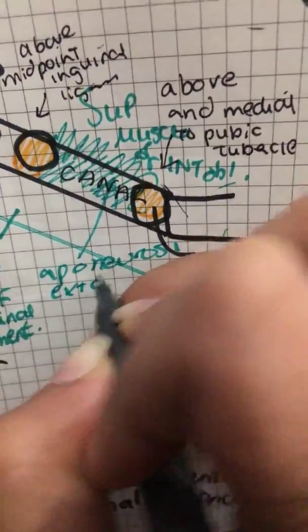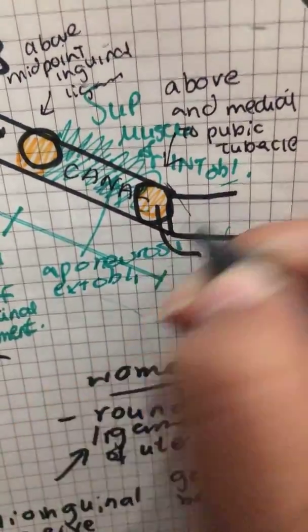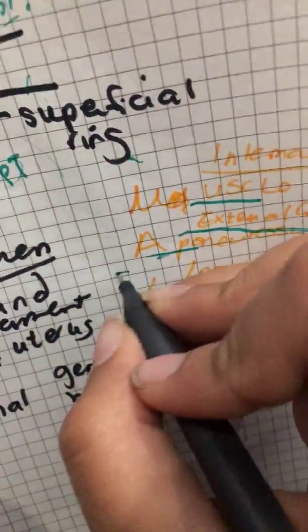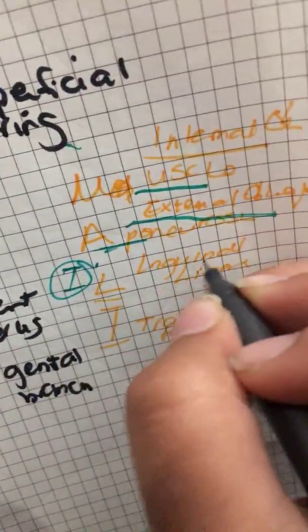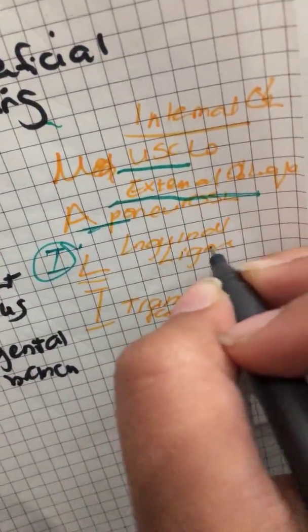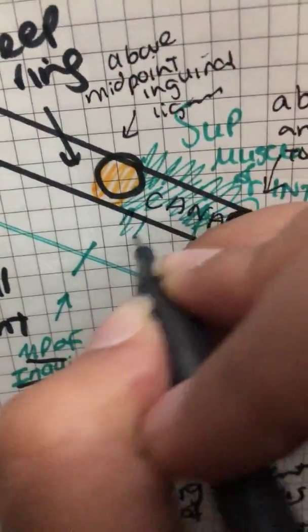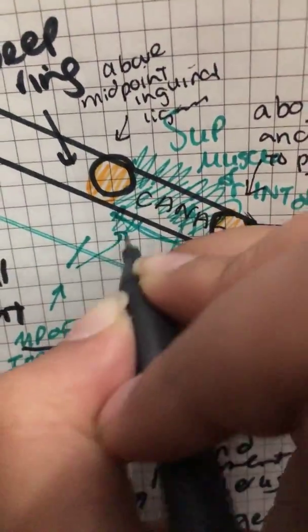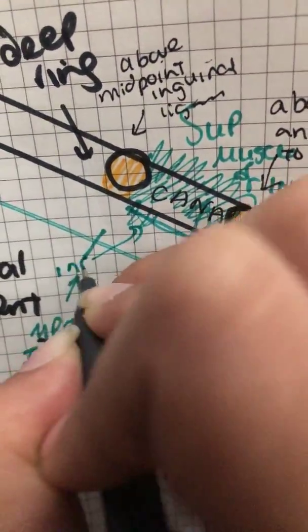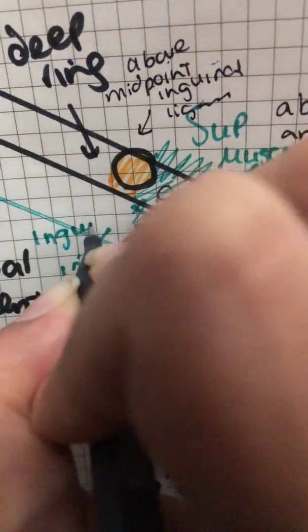That leaves inferior and posterior. L stands for ligament — the inguinal ligament, which has two I's just like 'inferiorly,' forms the inferior border. T stands for transversalis fascia, which is the deepest fascia in the abdominal region, and this forms the posterior border.